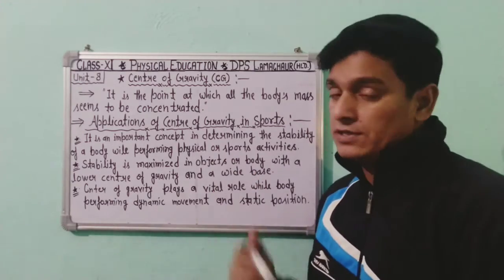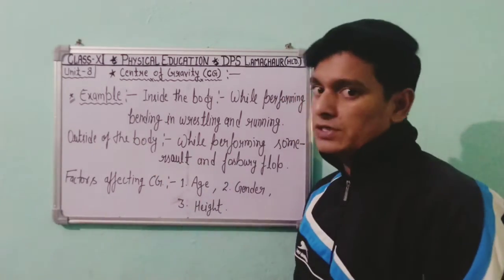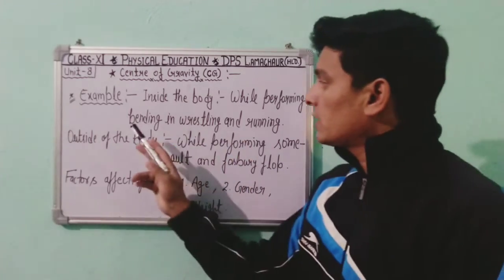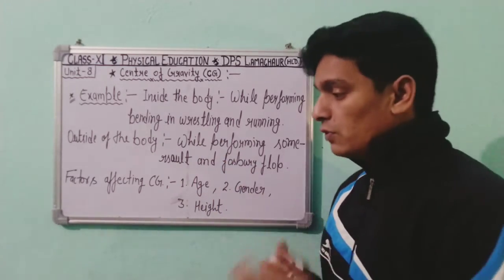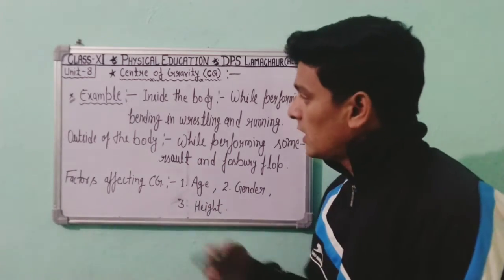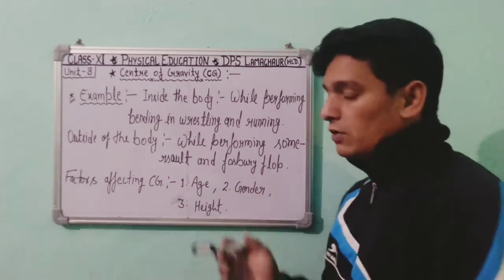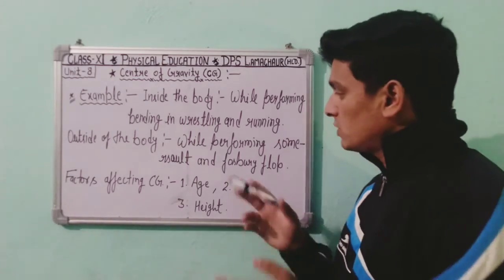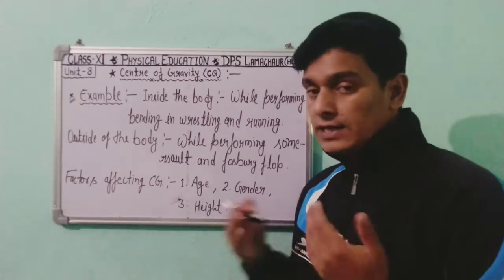Now let's know some examples related to Center of Gravity in sports activities. Inside the body, the Center of Gravity plays a great role while performing bending in wrestling and running, including bending of the legs during movement. Outside of the body, it plays a role while performing somersault and the Fosbury Flop, which are techniques used in jumping events.